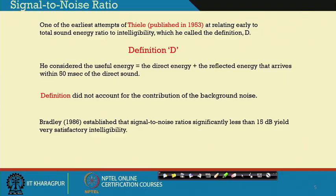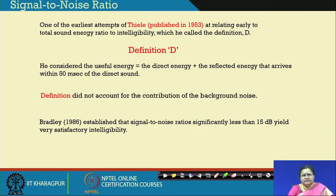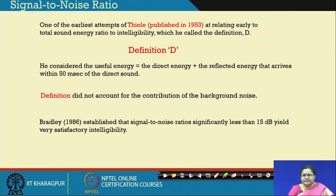From 1986 up to 2000, Bradley established that a signal to noise ratio significantly less than 15 dB will yield a very satisfactory intelligibility. He later stated that if the signal to noise ratio is between 10 to 15 dB, it is satisfactorily intelligible — up to 80 to 100 percent intelligibility can be achieved. These are background studies, and you can see from the dates that these findings are only about 15 to 30 years old.